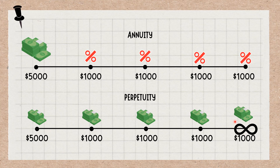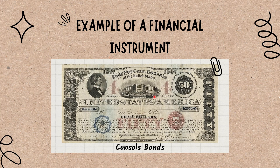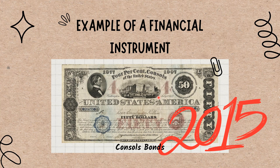In finance, a person uses the perpetuity calculation in valuation methodologies to find the present value of a company's cash flows when discounted back at a certain rate. An example of a financial instrument with perpetual cash flows was the British-issued bonds known as consuls, which the Bank of England phased out in 2015. By purchasing a consul from the British government, the bondholder was entitled to receive annual interest payments forever.